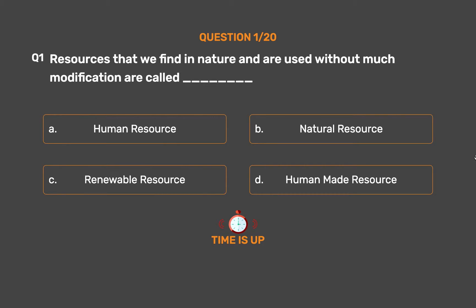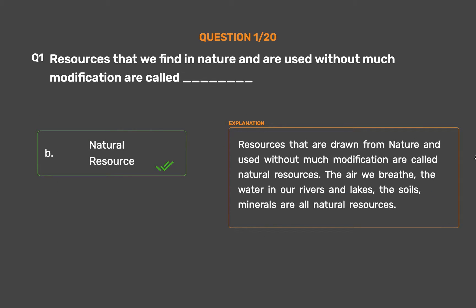The correct answer is Option B: Natural resource. Resources that are drawn from nature and used without much modification are called natural resources. The air we breathe, the water in our rivers and lakes, the soils, and minerals are all natural resources.